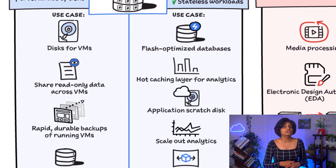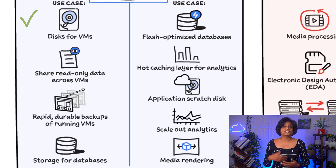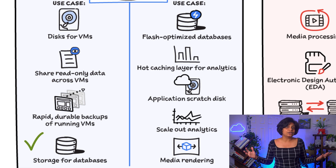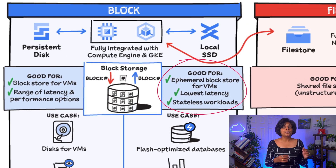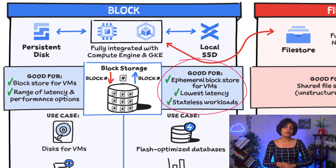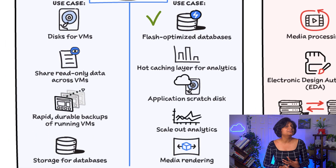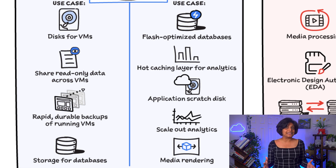The use cases of persistent disks include disks for VMs and shared read-only data across multiple VMs. It is also used for rapid, durable backups of running VMs and storage for databases, since it offers really high performance. Local SSD is also block storage, but it is ephemeral in nature, so typically used for stateless workloads that require the lowest latencies. Use cases typically include flash-optimized databases, hard caching layers for analytics, scratch disk for any application, scale-out analytics, and media rendering.